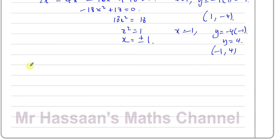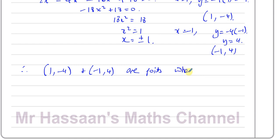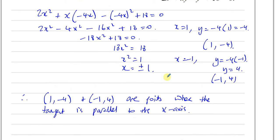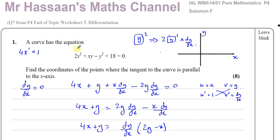So the coordinates of the points where the tangent is parallel to the x-axis are (1, −4) and (−1, 4). That's the answer to question seven — 8 marks for that question.